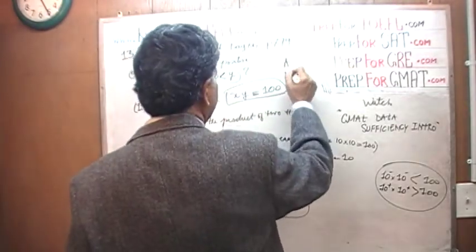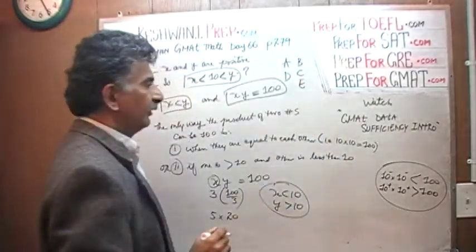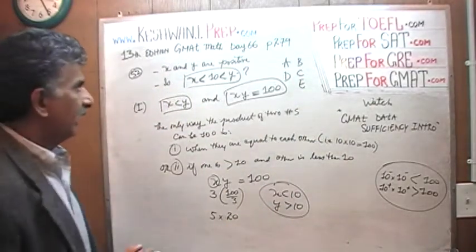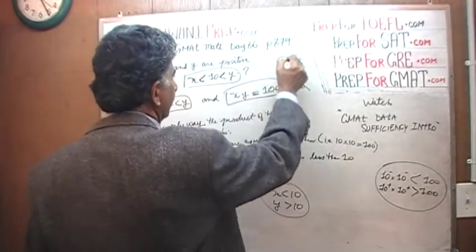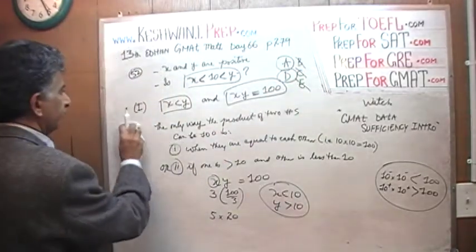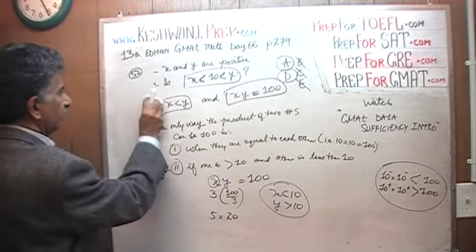A, D, B, C, E. Since the first statement by itself does the job, the answer cannot be B, C, or E, it has to be either A or D. Let's look at the second statement.